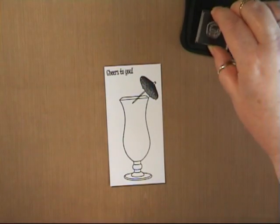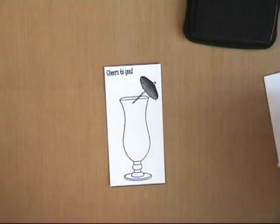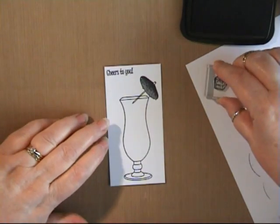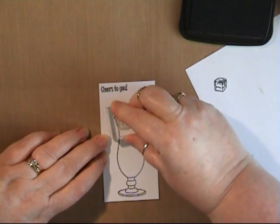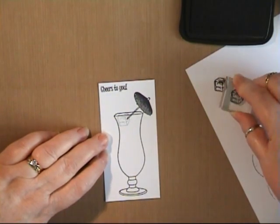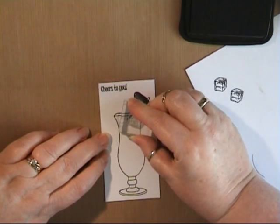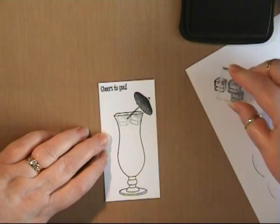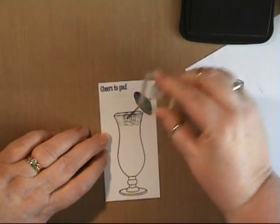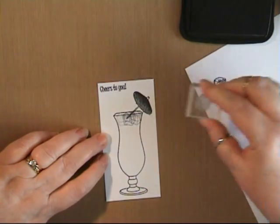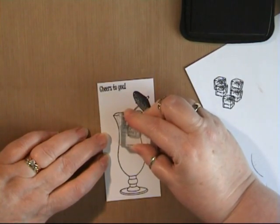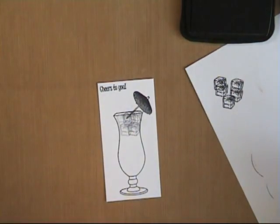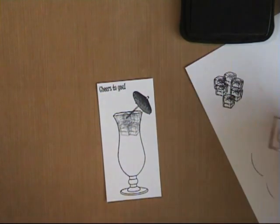We're going to use second generation ink. So I have a piece of scrap paper. Put in as much or as little ice as you need. We're now going to color with Pro markers.